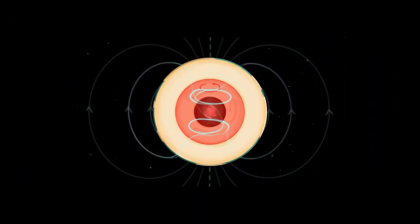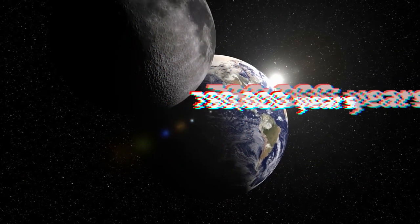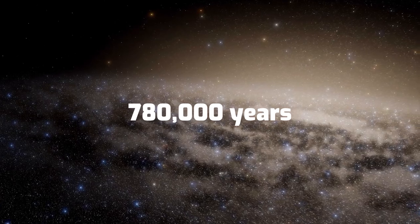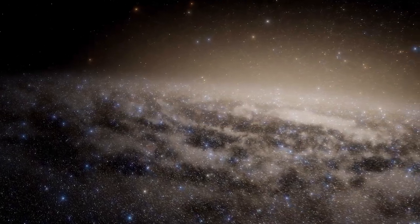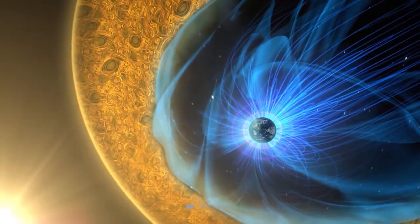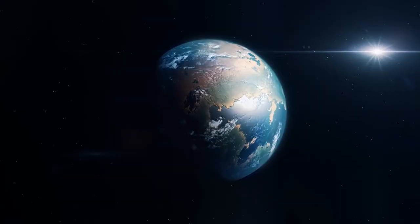And by examining the quantities of these in cores, we can determine when polarity reversals occurred. It's been 780,000 years since this occurred, and some scientists believe that the Earth's magnetic poles are overdue for a change.